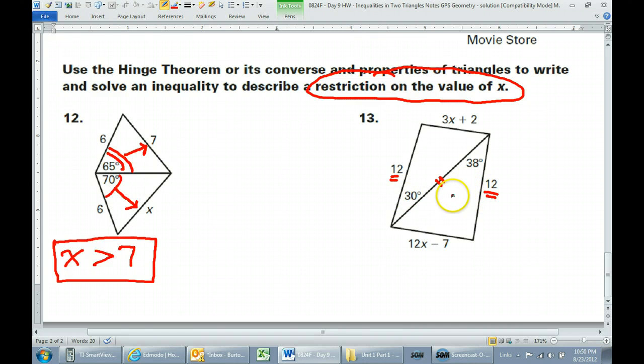So given two pairs of congruent sides, the bigger angle is always going to be across from the bigger side. And the bigger side is always going to be across from the bigger angle. So focus on these angles.